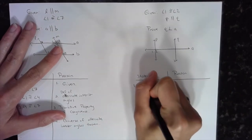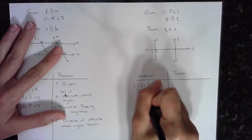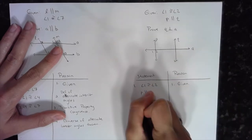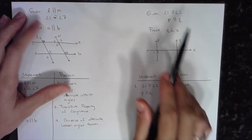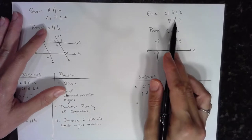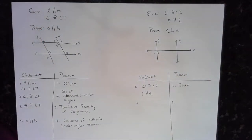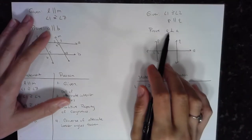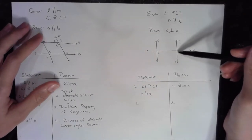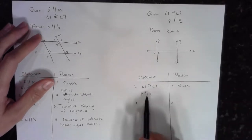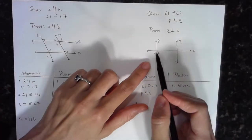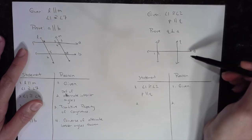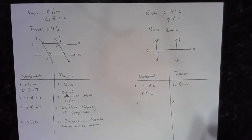For the second example, the first statement is what's given: angle one is congruent to angle two, and P is parallel to Q. The reason is 'given.' What I want to prove is that Q is perpendicular to A. Make sure you know the symbols — perpendicular, parallel, congruent, angle. I know my goal: Q perpendicular to A, and I need to get there from knowing angle one equals angle two and P parallel to Q.